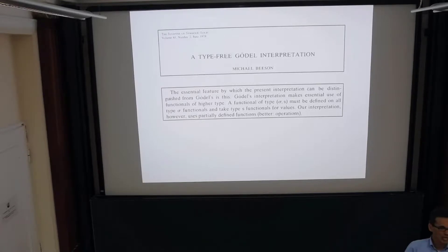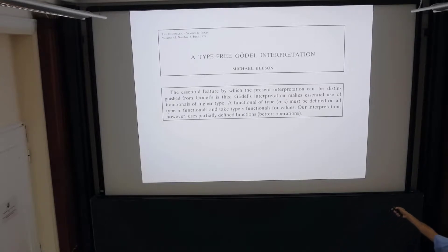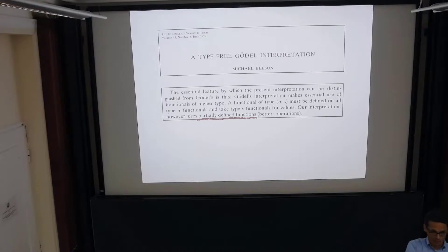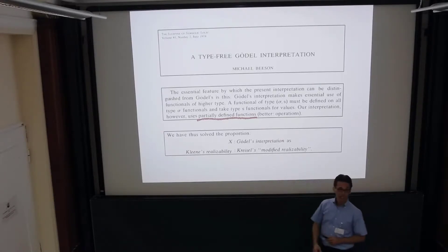This is quite natural to ask, and already in 1978 Michael Beeson asked this question. He was trying to understand — as he says in his introduction — the essential feature by which the present interpretation can be distinguished from Gödel's: Gödel's interpretation makes use of functions of higher type, all total functions, System T, whereas his interpretation uses partially defined functions. So he was trying to make use of Kleene's idea that maybe we can work with all computable functions, but then we have to allow for functions to be undefined.